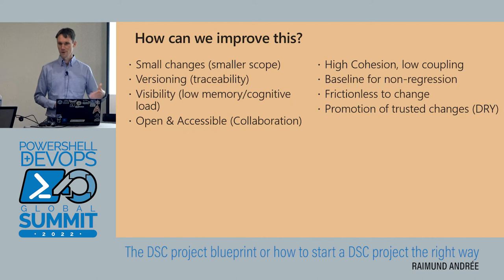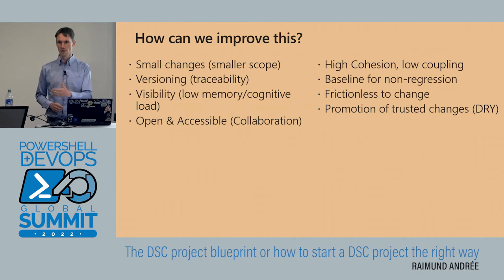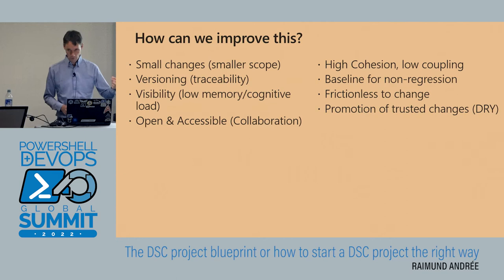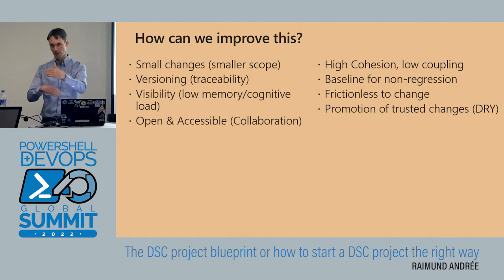Versioning and traceability: with this concept, we do attach versions to servers. The MOF file applied to a node contains a version number that gets written into the registry — so we know exactly what version a server is on. From the version we can trace back to a git commit ID, knowing exactly which changes were implemented in that version.